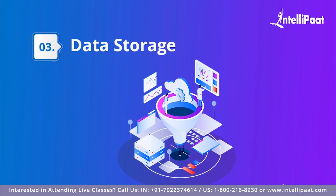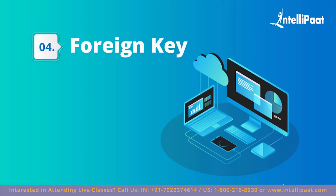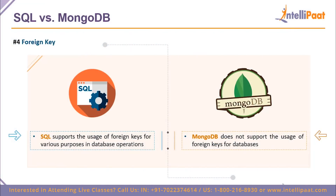The third point is data storage. SQL stores data in databases using tables and interlinked storage methodologies. MongoDB, being a NoSQL database, stores data as key-value pairs in collection-based databases. This is one of the most important differences between SQL and MongoDB.